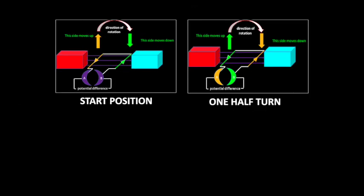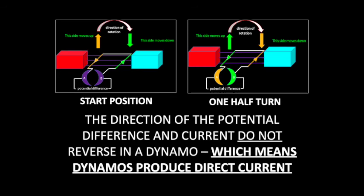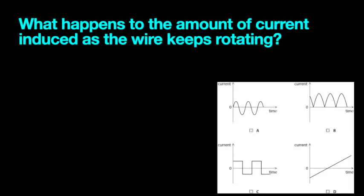So as we can see, our start position and end position are very similar. In fact, the current and potential difference does not reverse in a dynamo. As the current flow doesn't reverse, dynamos produce direct current. So which of these diagrams do you think represents a dynamo? Is it A, B, C or D? Pause the video and have a go.